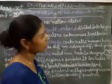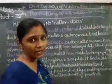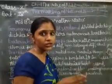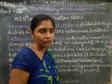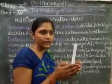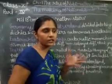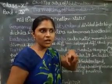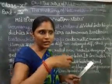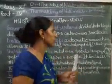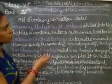Hello students. In this video we will try to understand the making of nationalism in Europe. As I told you in the earlier videos, the nation-state is the state or the country where the territories are defined, the majority of the people constitute the country and the government is with the consent of the people, not the monarchy that rules over the people.